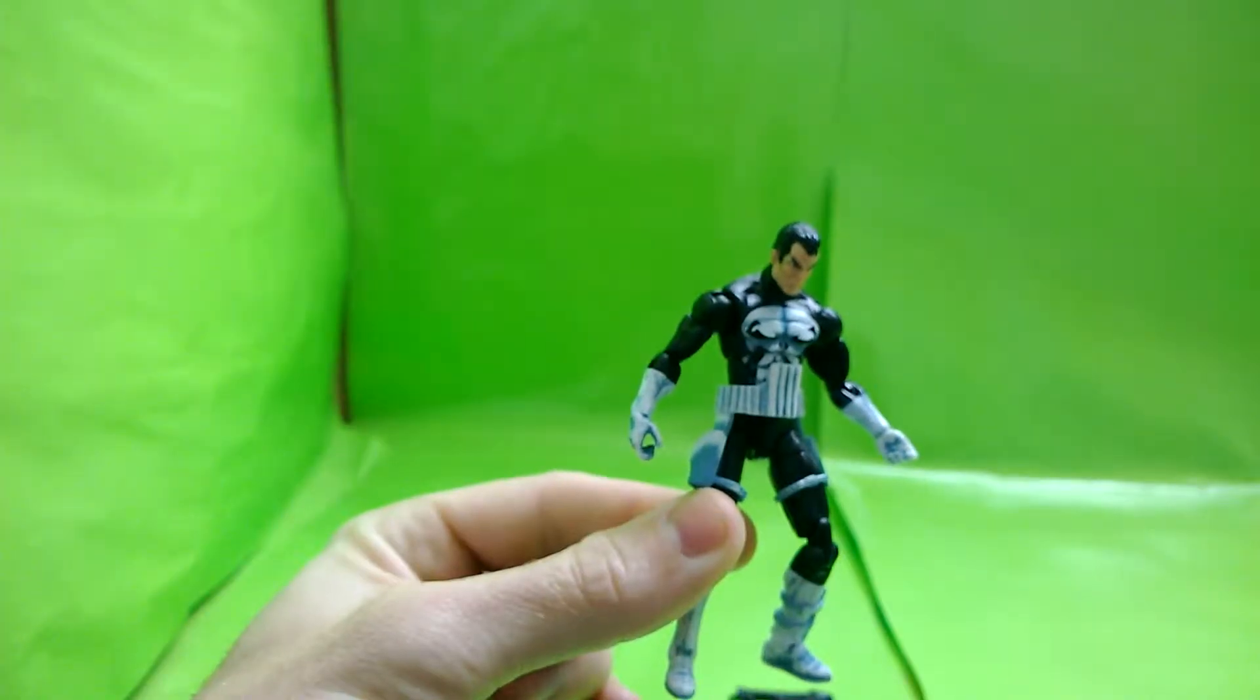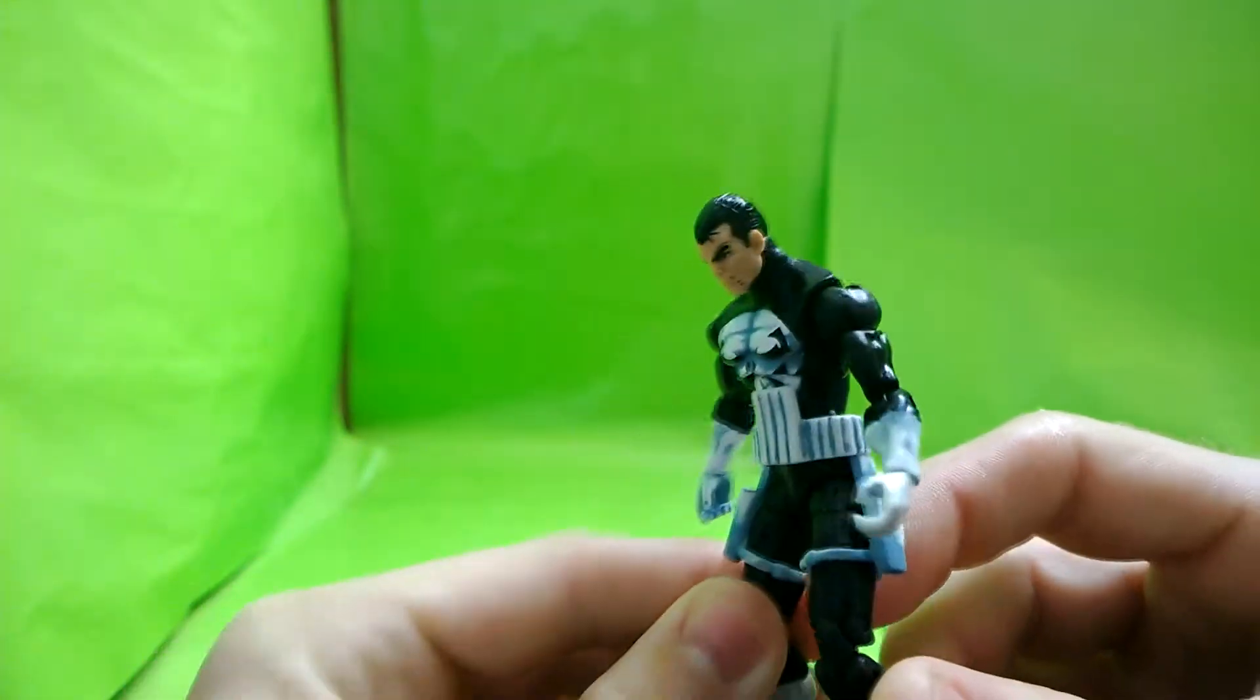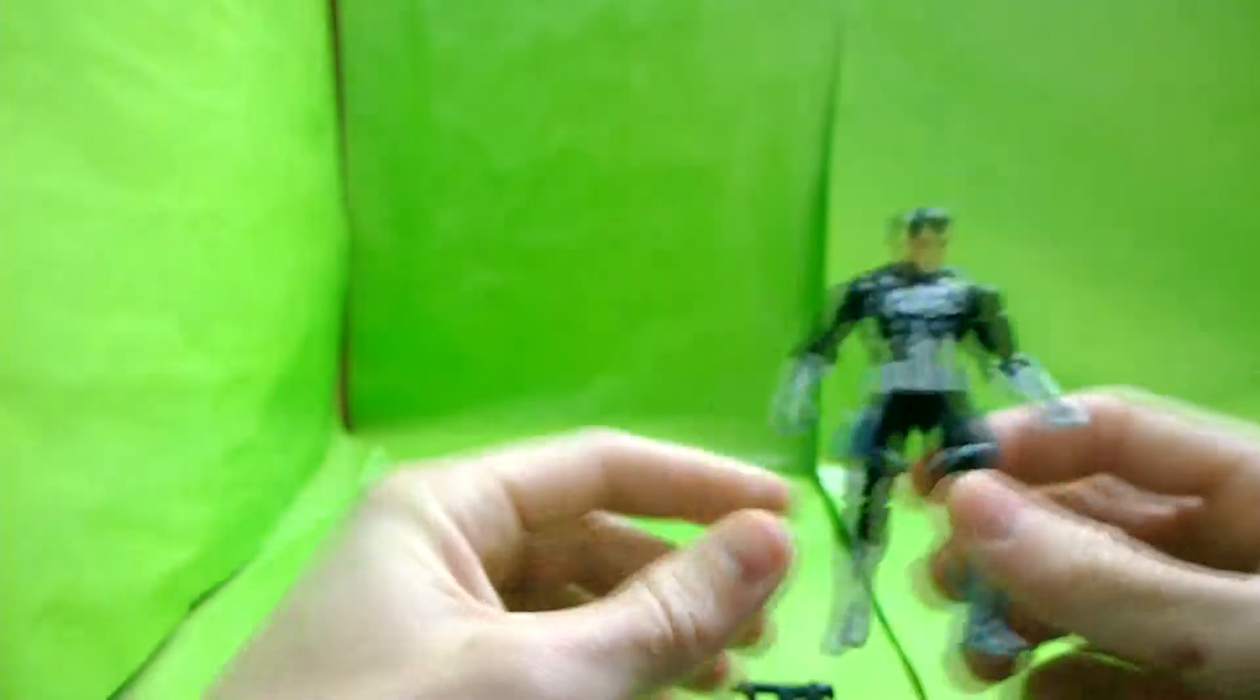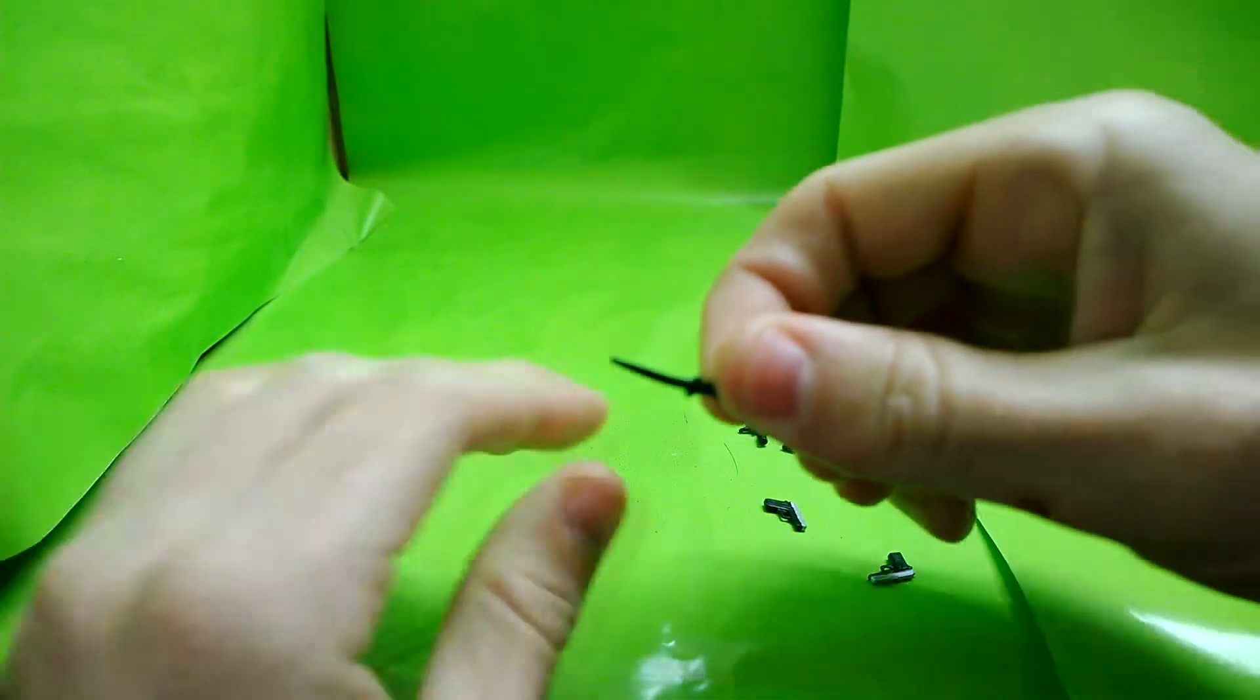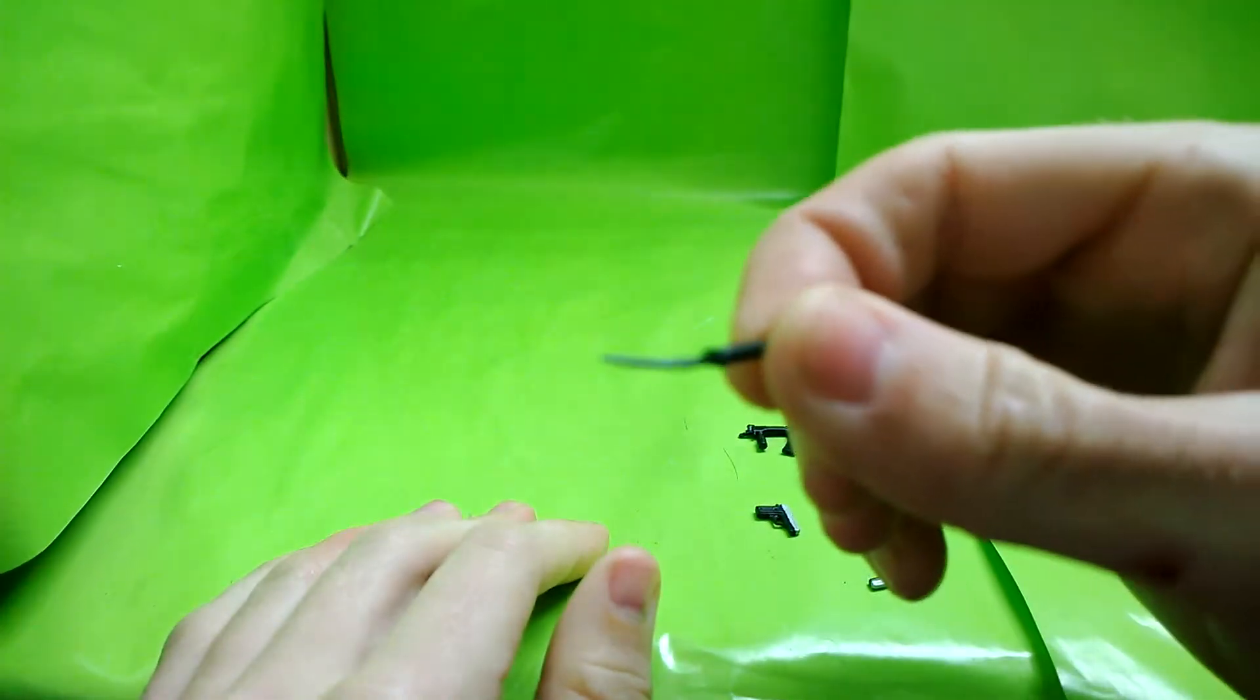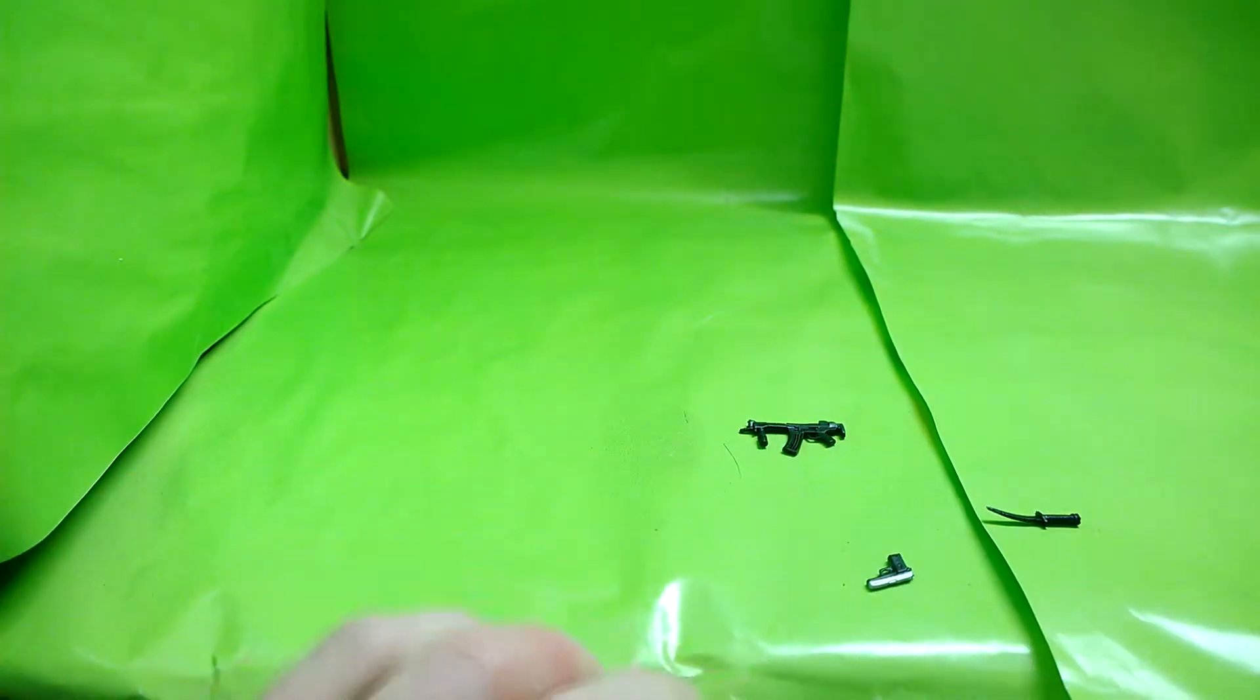Here he is out of the box. His body sculpt is pretty good, I like it. He comes with four accessories: he comes with a knife, comes with two pistols.